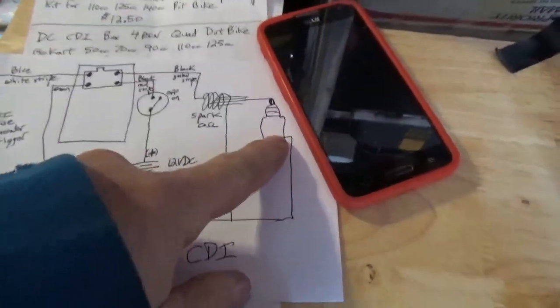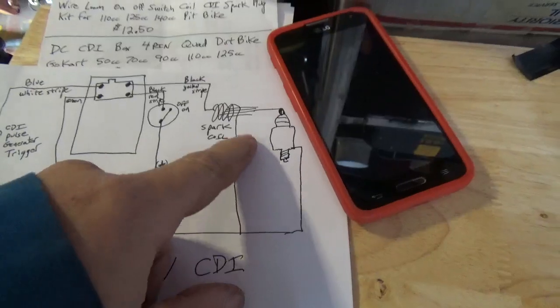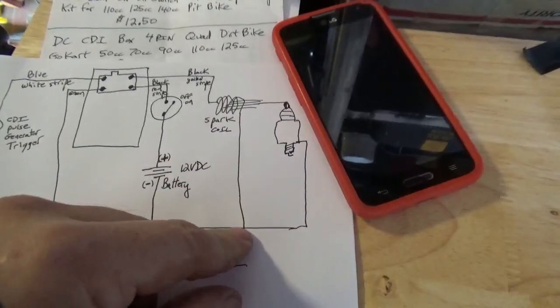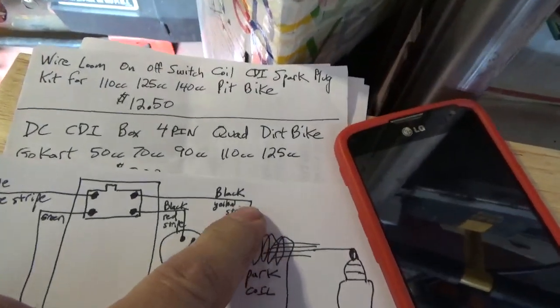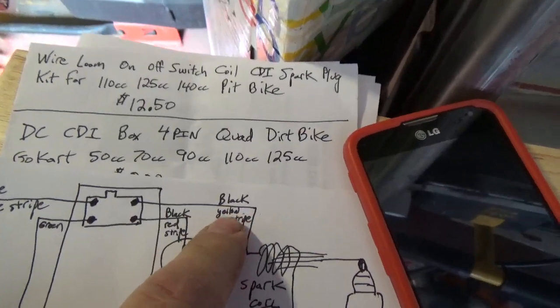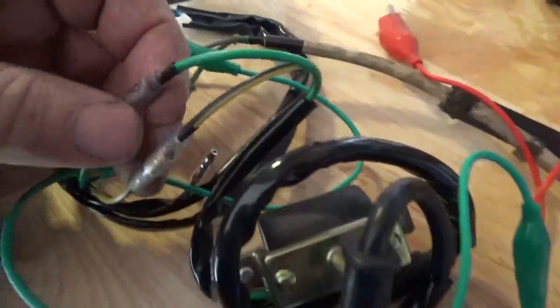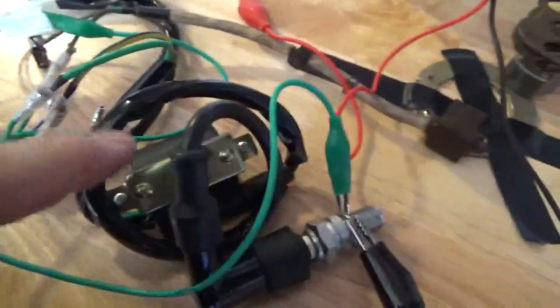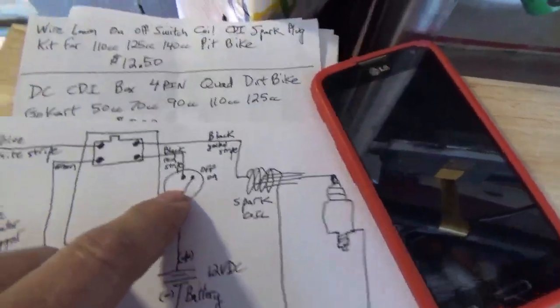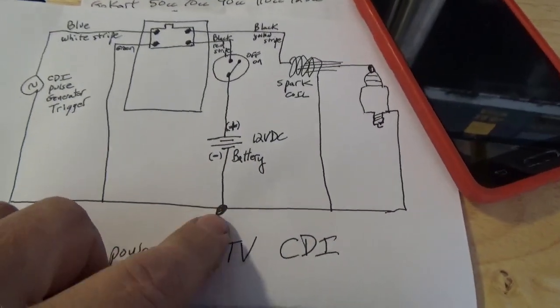Right, so I just showed you this connection and this connection. And now I'm going to show you, you see the black with the yellow stripe? Very simple. See the black with the yellow stripe hooked right to the spark coil.